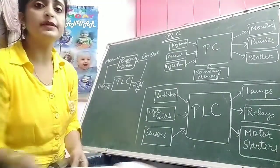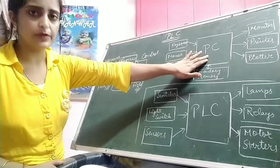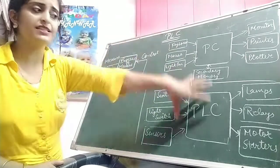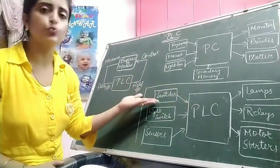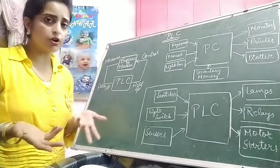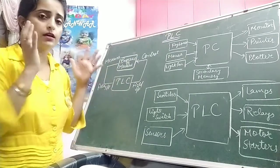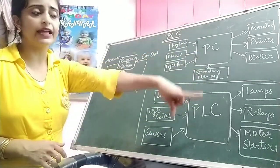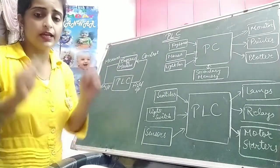You can see the PLC has the same processing unit and memories in between. For inputs, instead of keyboard, mouse, and light pen, the PLC uses switches, limit switches, and sensors — as in industries, keyboard and mouse are not required. The main inputs in PLC are switches, limit switches, and sensors. Outputs can be taken on lamps, relays, motor starters, etc. This is the PLC — somewhat different from a simple PC. The main difference is that PLCs have additional input-output devices.